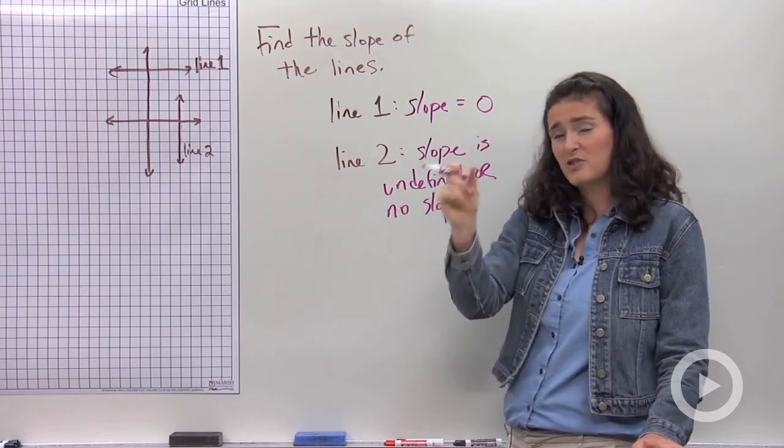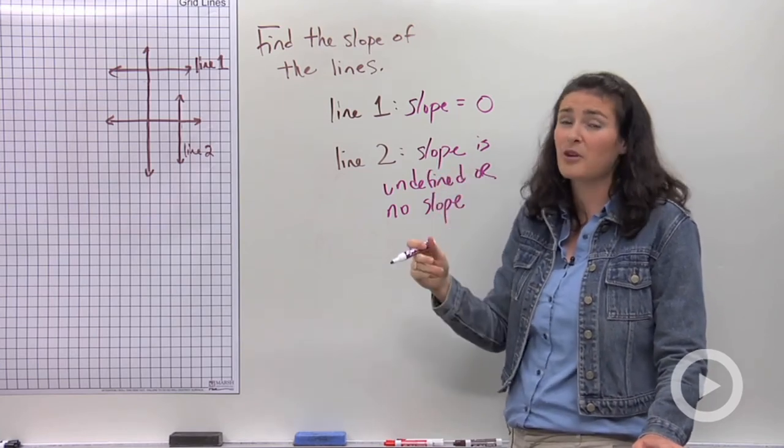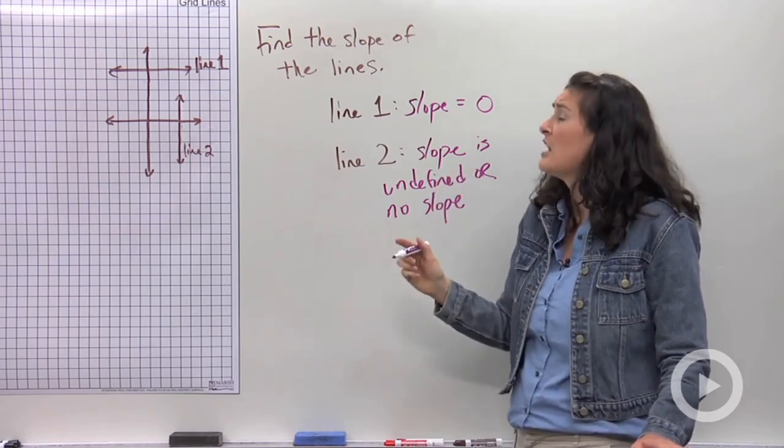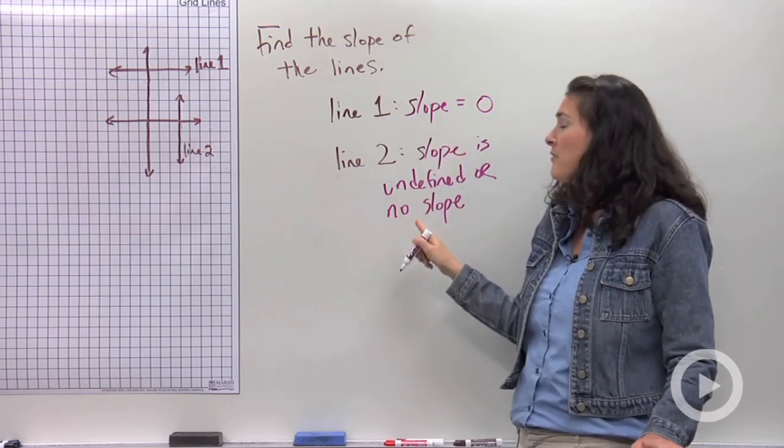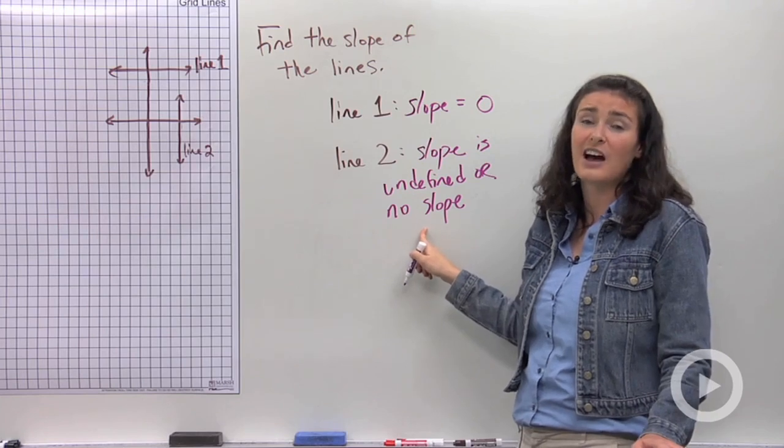So if you want to be a superstar and get these really quick, try just memorizing: always, always, always, the slope of a horizontal line is zero, and the slope of a vertical line is always undefined.